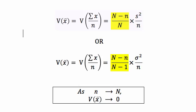then this fraction, that yellow fraction, is going to tend towards 1, leaving us with just s squared over little n, like we're used to seeing. But if capital N is finite, we need to take account of that, and that's what these little yellow factors are doing for us.